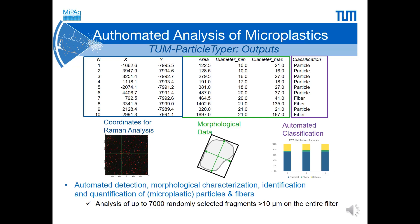At the moment, we can analyze up to 7,000 randomly selected fragments larger than 10 micrometers on the entire filter, and we are working further to develop representative analysis of particles smaller than 10 micrometers.